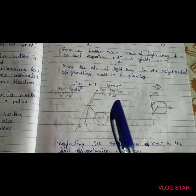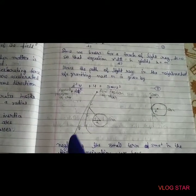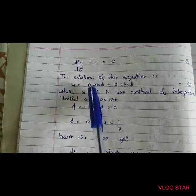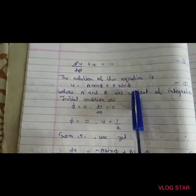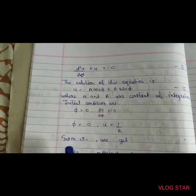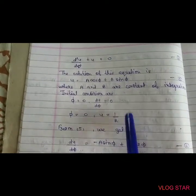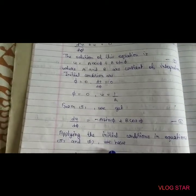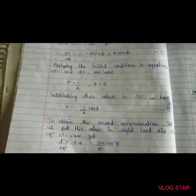Now the zeroth approximation path of the light ray is given by d²u/dφ² + u = 0. Setting φ = 0, we get du/dφ = 0, then u = 0 and d = 1/R. So u = (1/R)cos φ, giving the straight-line solution.